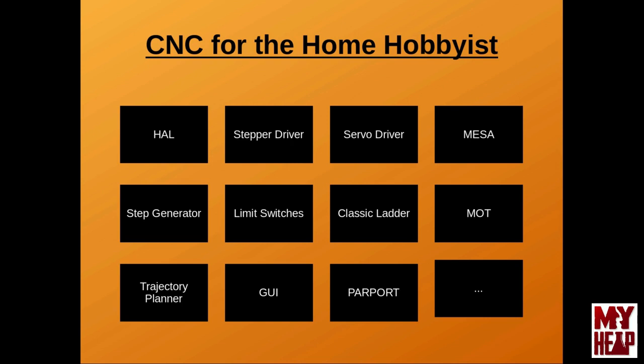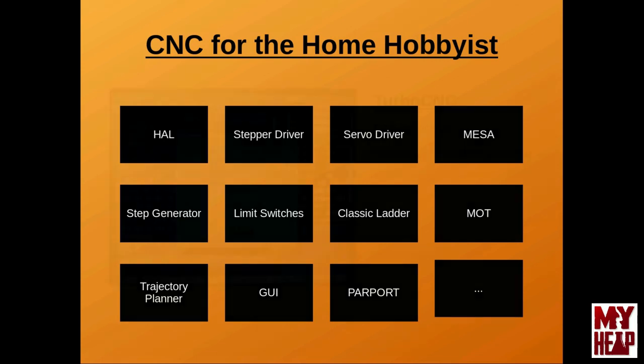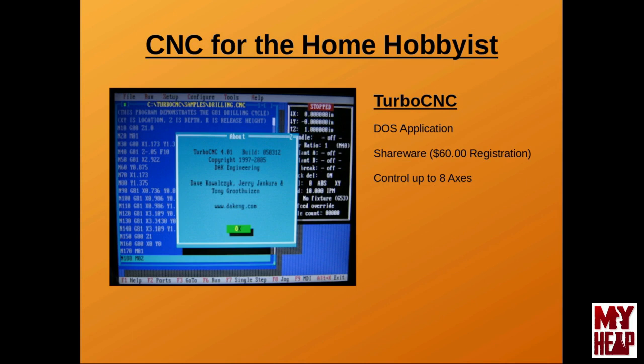As far as the hobbyist goes, there are three main controllers to choose from. The one you decide to use might be driven by price, function, the underlying operating system, or perhaps something else. There are religious wars about what controller is best, and I'm leaving that entirely up to you. The three main controllers available to hobbyists are Turbo CNC, Mach 3 or Mach 4, and Linux CNC, formerly known as EMC or EMC2. Turbo CNC was written by DAC Engineering — it is fully functional shareware with a $60 registration fee, a DOS application that can drive a machine with up to eight axes of motion. This is the first controller I ever used, running it on an old Pentium machine with FreeDOS before switching to EMC2.